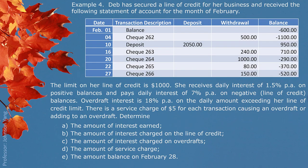Example 4 covers a line of credit situation. Given an activity list for February, we follow the activity table to answer the questions. The policy for this line of credit: limit is $1,000; positive balance earns interest at 1.5%; negative balance is charged interest at 7%; overdraft — amounts exceeding the $1,000 limit — is charged 18%; and when an overdraft occurs, a service charge fee of $5 applies.